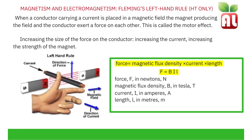Point your index finger from north to south in the direction of the magnetic field, and your middle finger from positive to negative in the direction of the current flow. The direction your thumb points as a result is the direction of the force. To increase the size of the force on the conductor, you can either increase the current or increase the strength of the magnet. To calculate the size of the force, multiply magnetic flux density measured in Tesla by current measured in amps by the length in meters. This equation is given on the physics equation sheet.